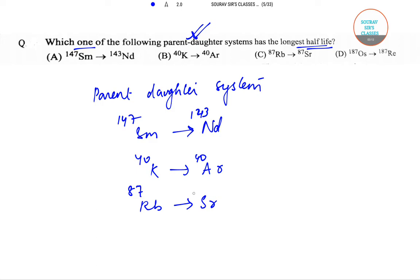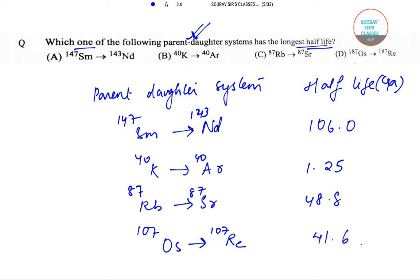This is 87, this is also 87, and this is 107 and the other is 107. So half-life column - here is our half-life column - this is in Ga. So this is 106.0, 1.25, 48.8, and the last one is 41.6. That means the correct answer is option A.